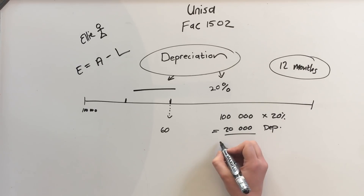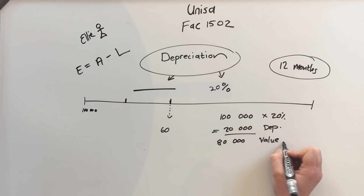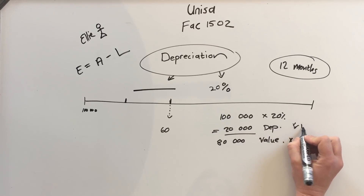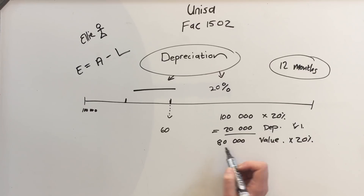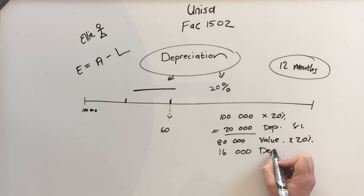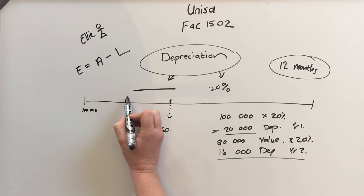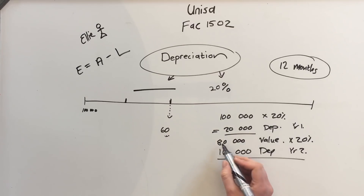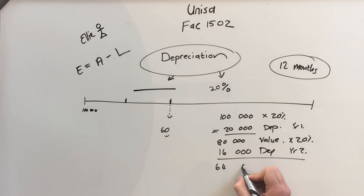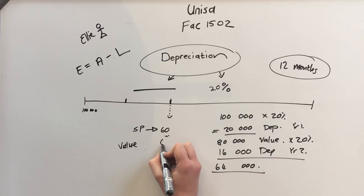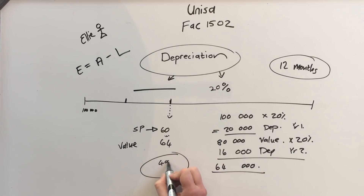The value of the car is now only 80,000. In year two, it's 20% of that new value — so 20% of 80,000 equals 16,000. So in the second year your depreciation is 16,000. After two years the value of the car is 80,000 minus 16,000 equals 64,000. If the selling price was 60,000, we actually made a 4,000 Rand loss — wait, the value was 64,000 so we made a profit when we sold it.